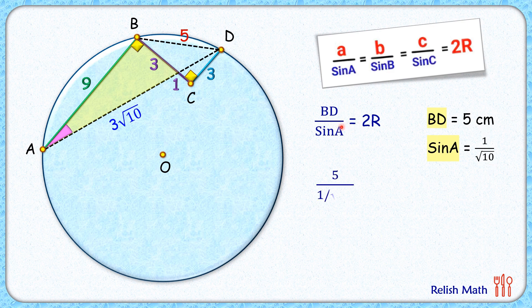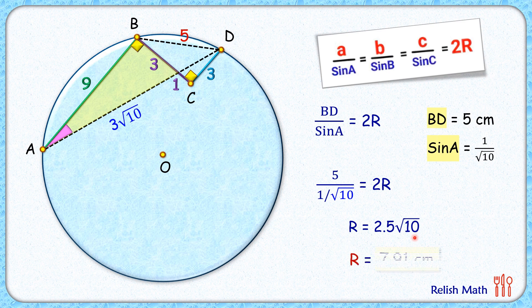Putting these values in: 5 / (1/√10) = 2R. Simplifying gives R = 2.5√10, and solving gives R ≈ 7.91 cm. That's our answer.